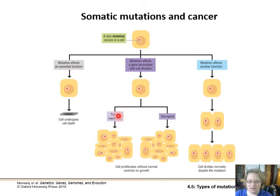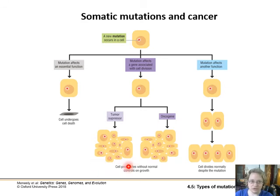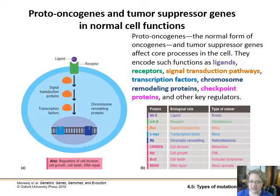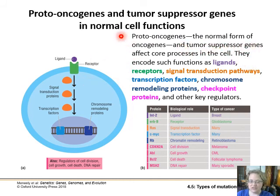If a mutation affects a tumor suppressor gene — which keeps the cell from dividing uncontrollably — or an oncogene — a gene that actively causes the cell to divide — you now have cells proliferating without any normal control, which is broadly described as cancer. A proto-oncogene is the non-mutated form of an oncogene. Tumor suppressor genes can affect core processes through ligands, receptors, transduction proteins, and transcription factors.